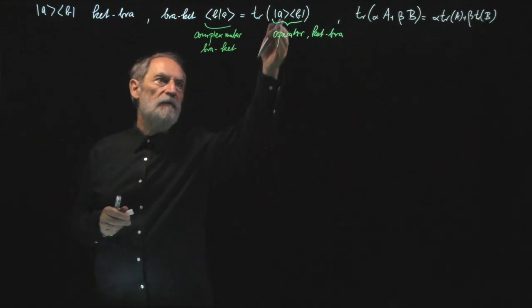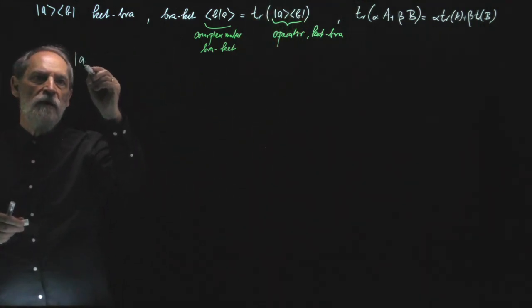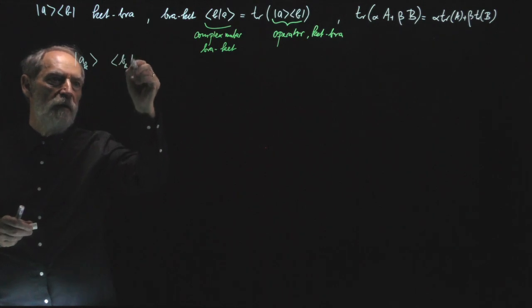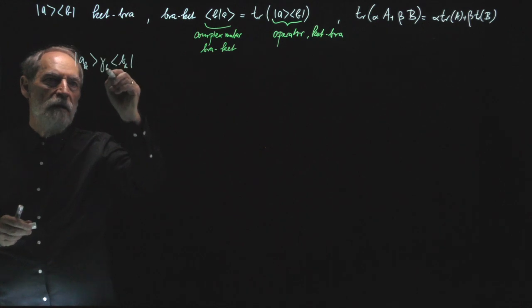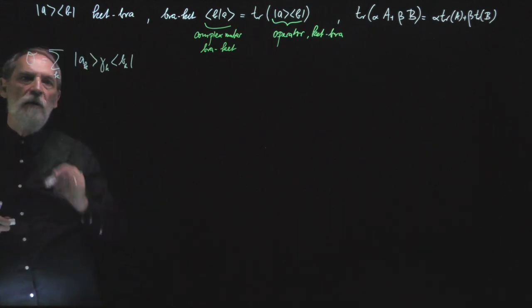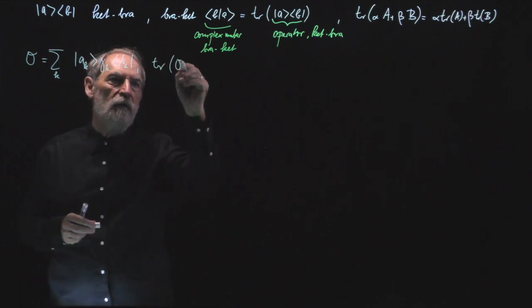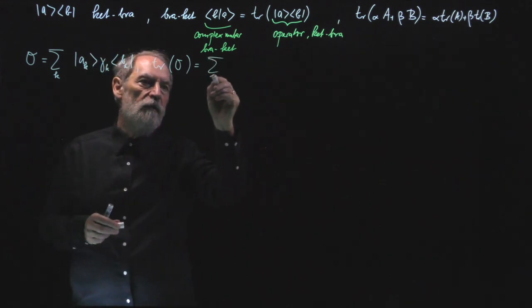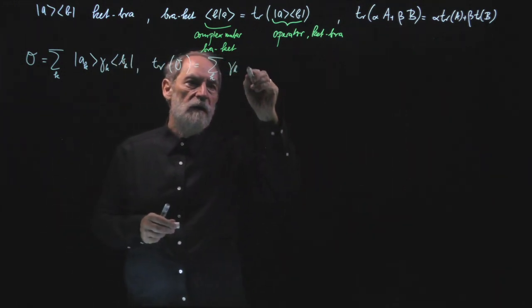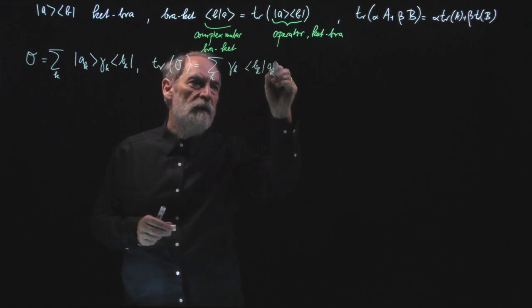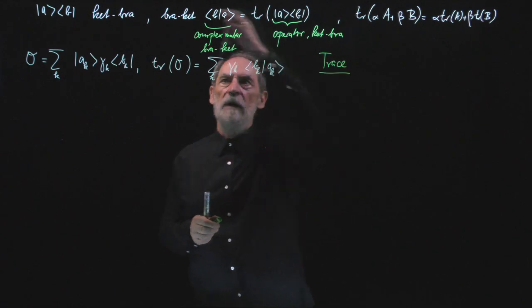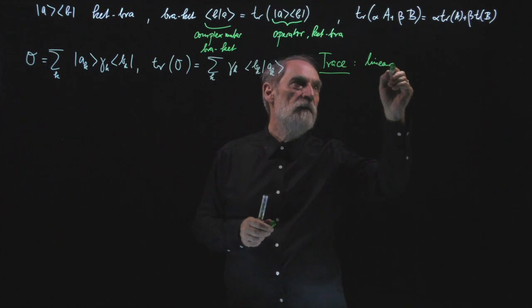In particular, if I have many ket-bras — say kets labeled by k and bras labeled by k, with numbers gamma_k in between — and I sum over these k's, then this is some operator O. If I take the trace of this operator O, that is just the sum over k of gamma_k times the bracket of bra B_k and ket A_k. So the trace is linear in this sense.